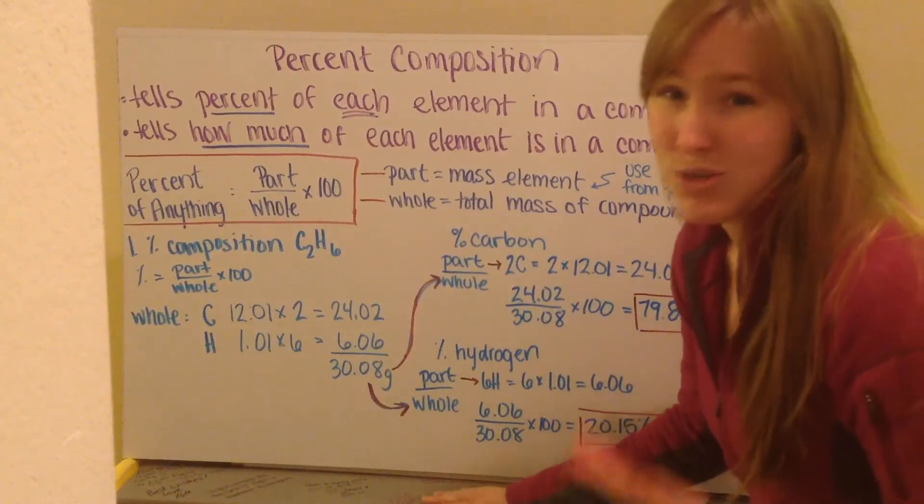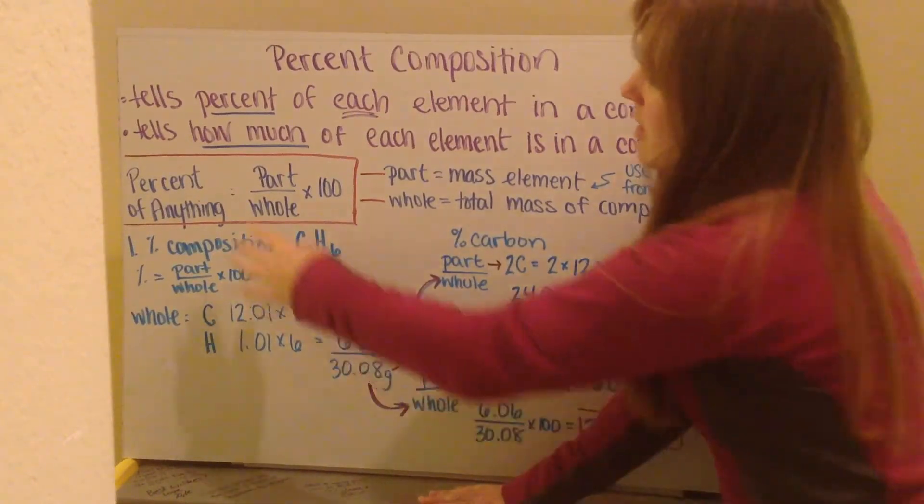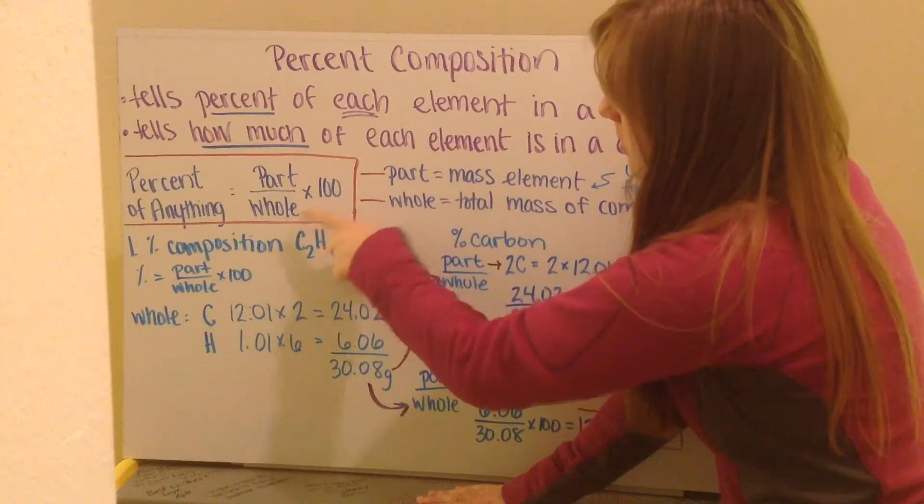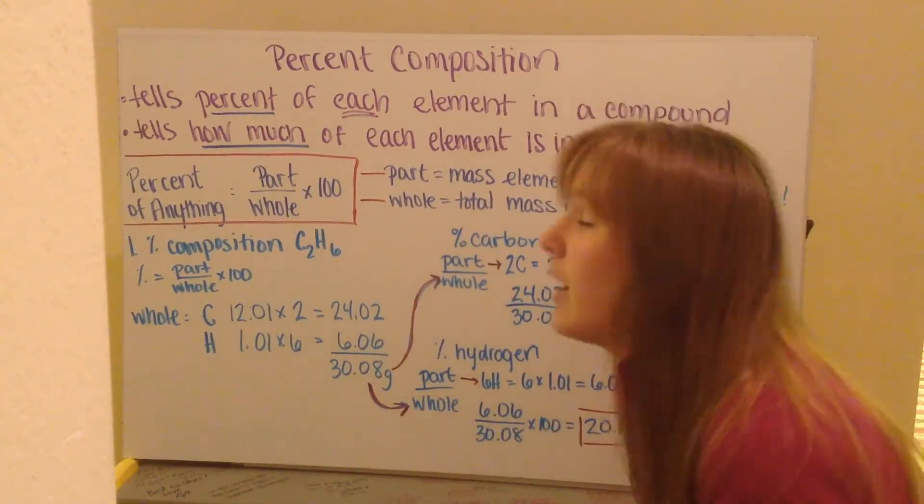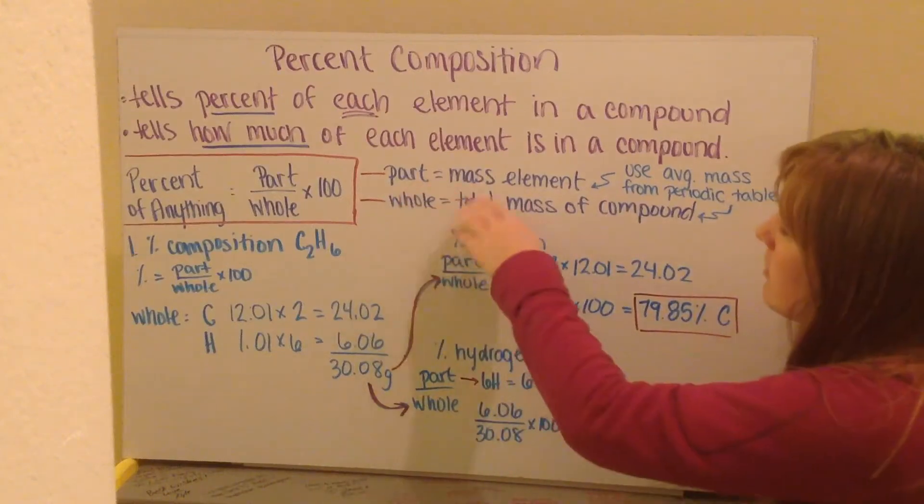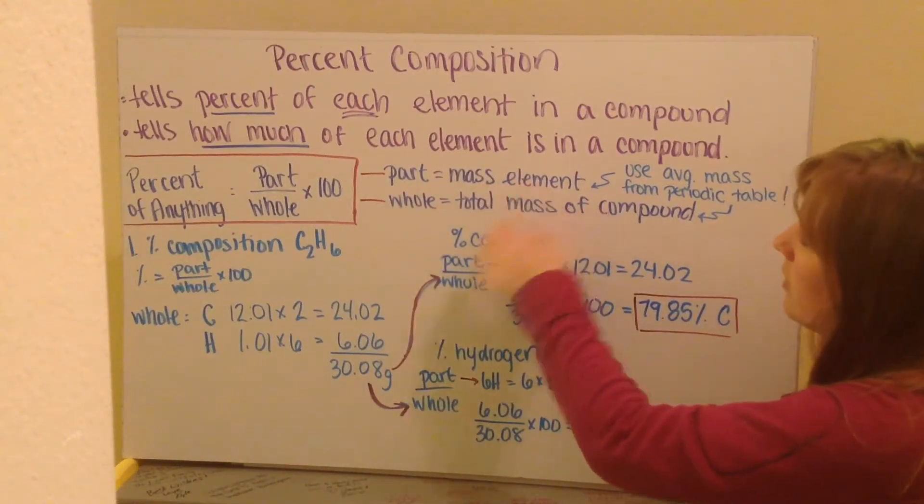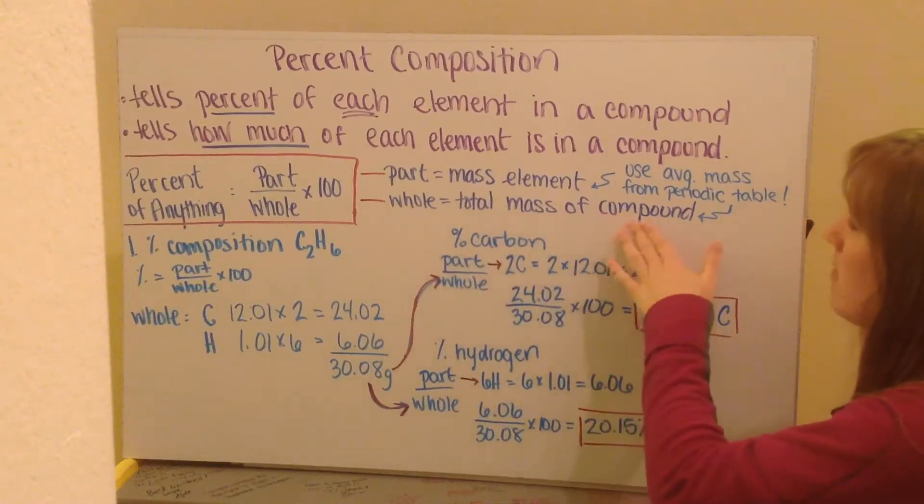Percents work like percents with everything else. The percent of anything is the part over the whole times 100. When we're talking about percent composition of elements, our part is the mass of the element we're looking for, and the whole is the total mass of the compound.